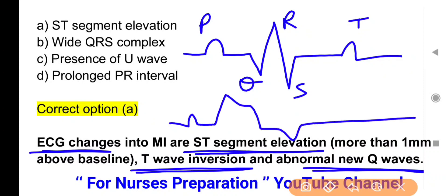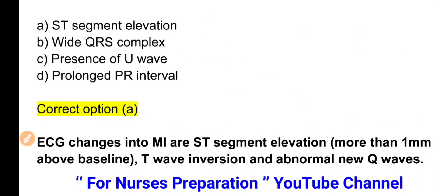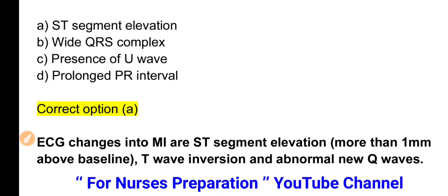Patient को MI होने पर ST Segment elevated आता है, T Wave inverted आती है, और Q Wave abnormal होती है। याद रखें: एक बार Heart Attack आ जाने के बाद हमेशा Q Wave abnormal मिलेगी — ST Segment और T Wave तो normal आ सकती हैं, लेकिन MI के बाद Q Wave हमेशा abnormal ही मिलेगी। This question has been asked in previous exams multiple times.